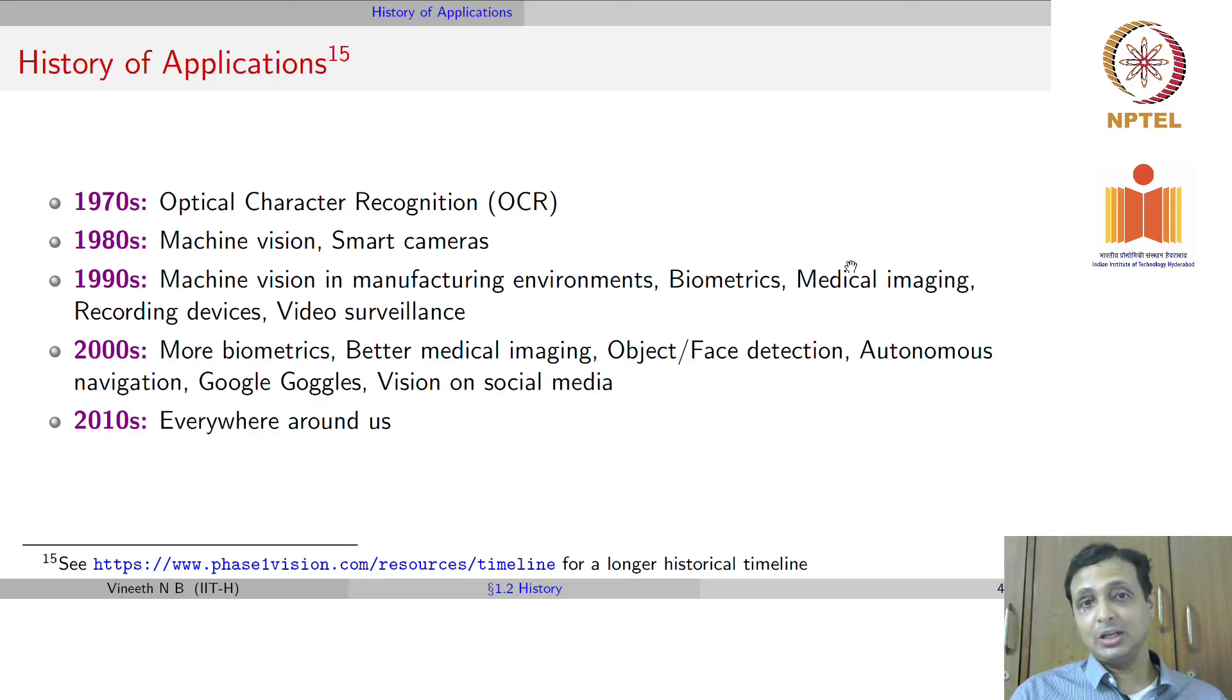In the 1990s, slowly the applications of vision started growing. Machine vision and manufacturing environments continued to grow. Biometrics, or recognizing people from images - could be from gait, face, iris, or gestures - all of that started growing. Medical imaging started becoming important. Recording devices, video surveillance, all of them started growing in the 90s. In the 2000s, more of all of these - better medical imaging, object and face detection, autonomous navigation started in the mid-2000s, Google Goggles, vision on social media, all of that started in the 2000s.